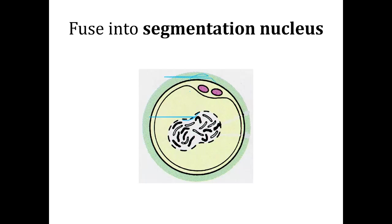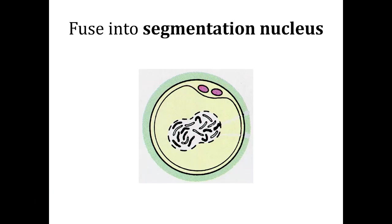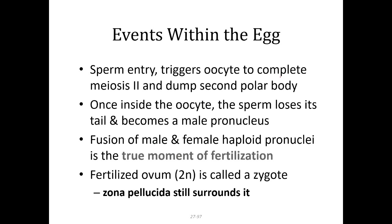Those structures you see there would be the polar bodies. When that oocyte was forming during meiosis I and meiosis II, the extra chromosomes had to go somewhere — to the polar bodies — which would then be broken down. Within the egg, the sperm triggers meiosis II completion and dumps the secondary polar body. The sperm loses its tail — most of the time the tail doesn't even reach inside the egg — it just releases its chromosomes. After syngamy, you have the true moment of fertilization where we form what is called a zygote.